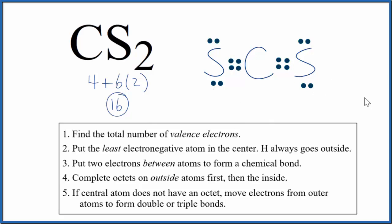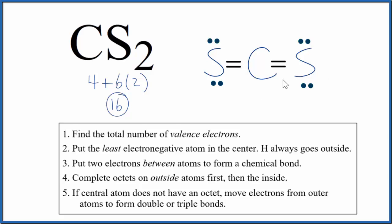So this is the correct Lewis structure for CS2. Sometimes you'll see these double bonds replaced with lines, where each line represents a pair of electrons — that's another way you could draw it. Either way, this is the Lewis structure for CS2.